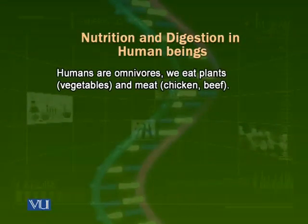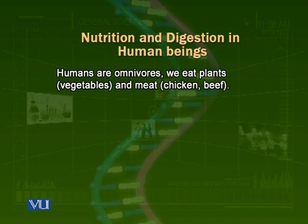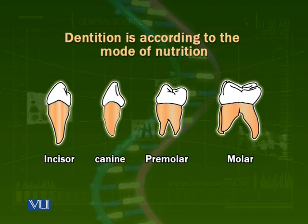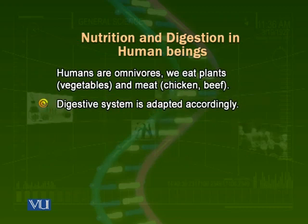Human beings are omnivores — we eat vegetables and meat, or a combination. If we look at our teeth, we have all four types: incisors (front teeth), canines (the pointed teeth on the sides), premolars, and molars. We have all four kinds of teeth because we take all types of food. The digestive system also adapts according to the nature of food available to an organism.